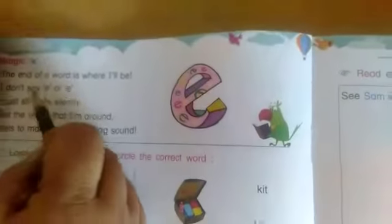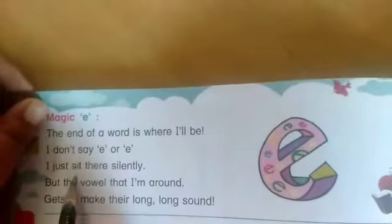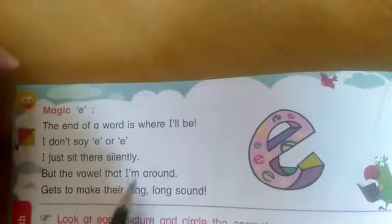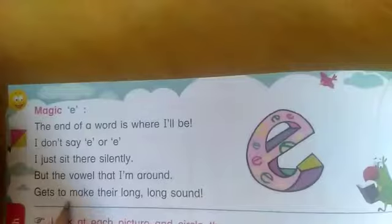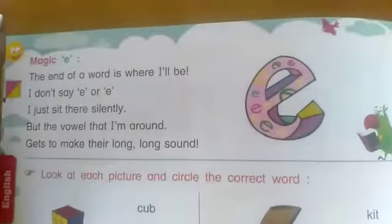Here are some questions. Magic E — the end of a word is where I will be. The end of the word is where I will be. I don't say a sound. I just sit there silently. But the vowel that I am around gets to make its long, long sound.